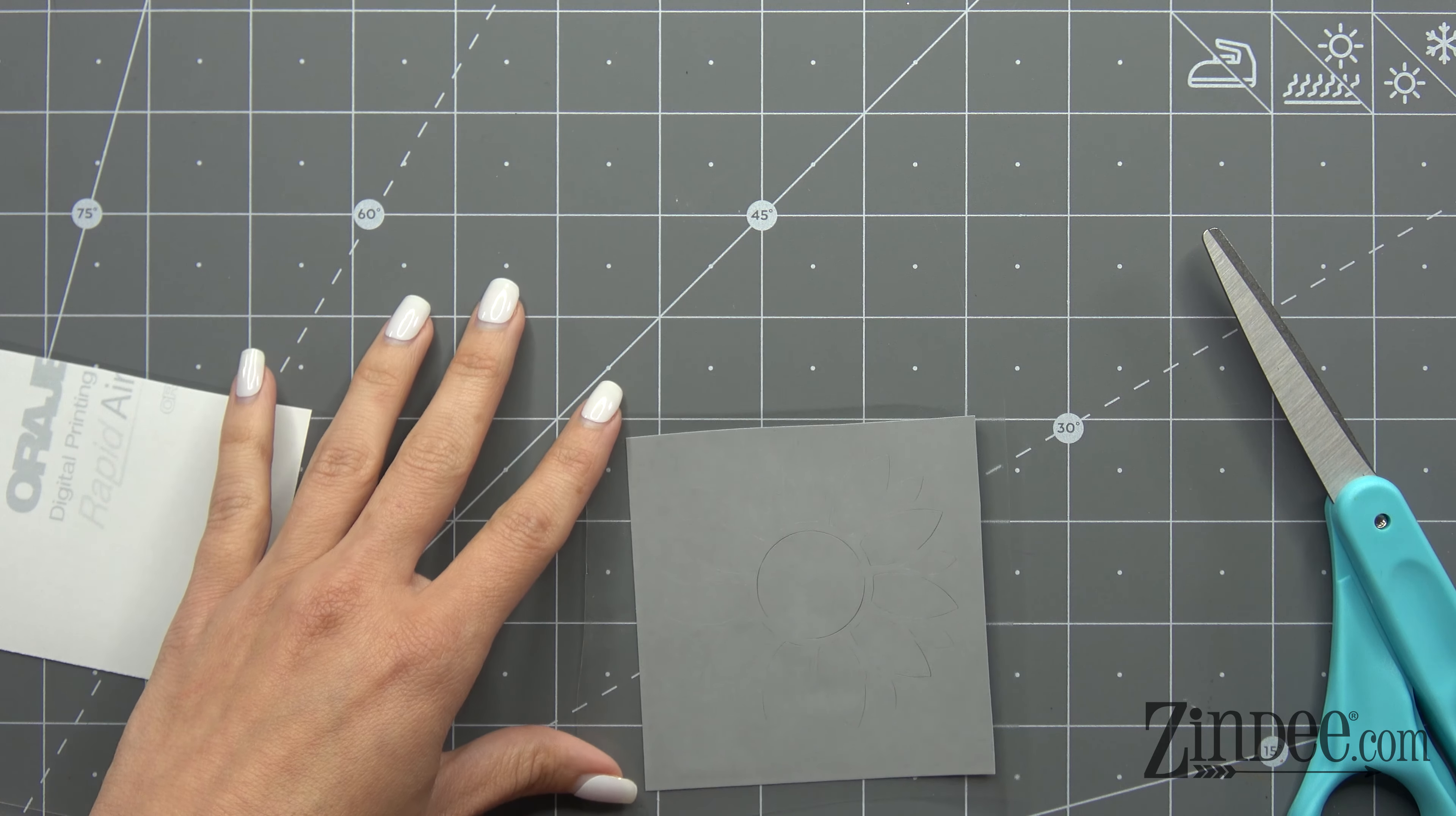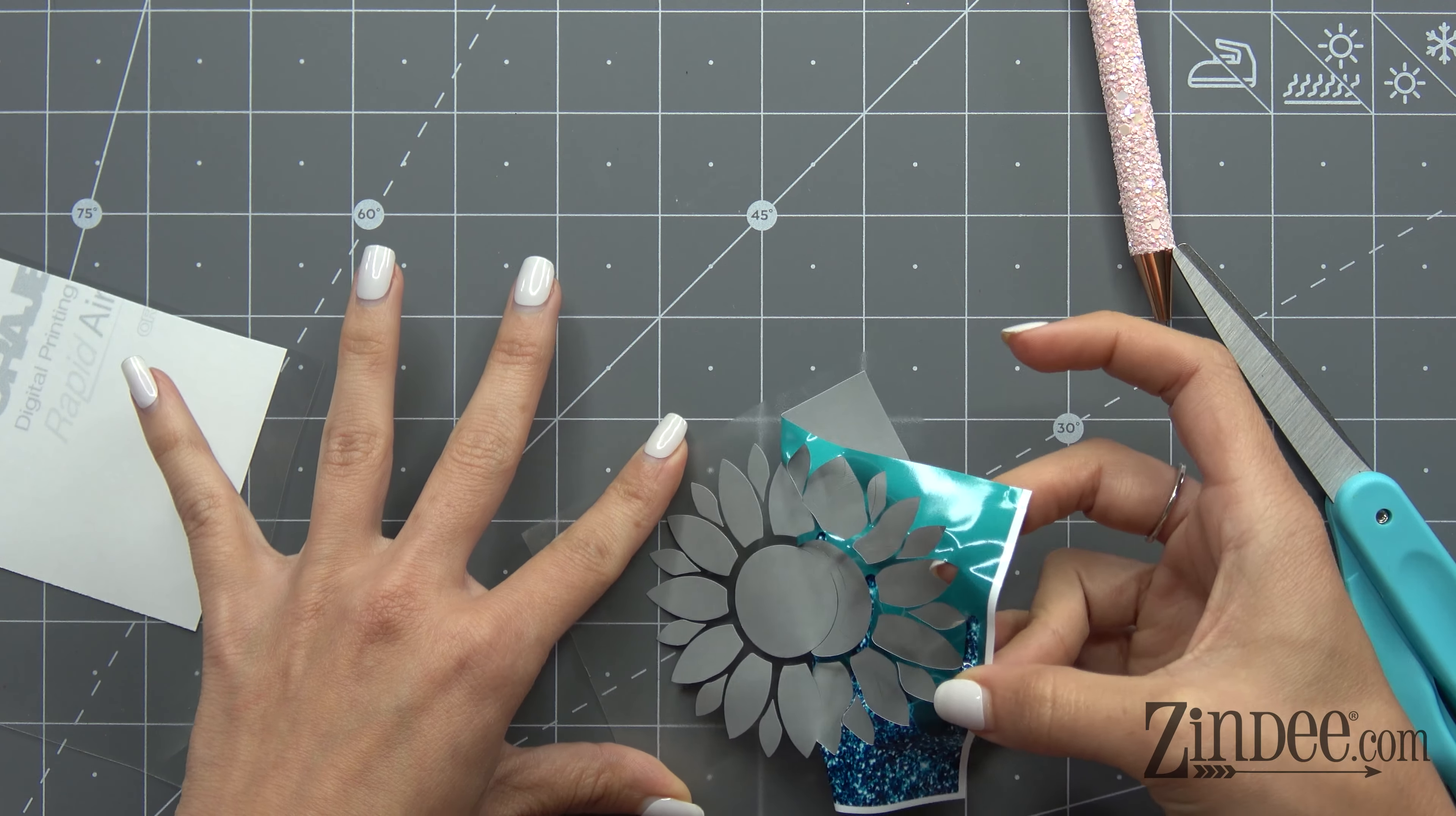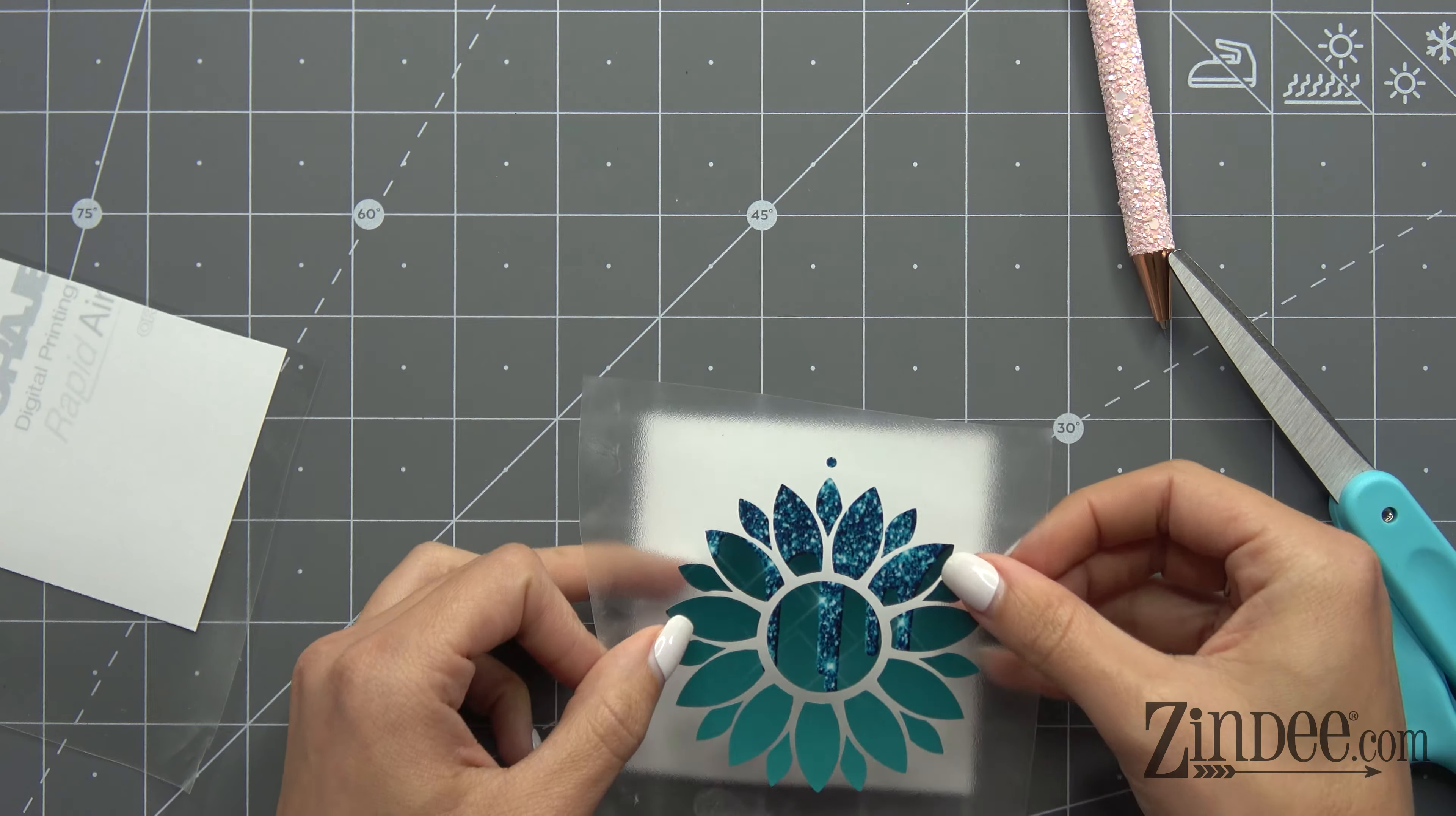From here, we're going to take our weeding tool and remove the parts of the vinyl we do not want. Just be careful because you'll be using this method for really detailed cuts, so you just want to make sure everything's staying where it needs to go. Super easy. So that sunflower is now weeded and ready to go. We're going to put it back on our backing paper for now until we're ready to use it.